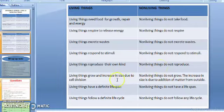Living things grow and increase in size due to cell division but non-living things do not grow. The increase in size is due to the addition of matter from outside that we have seen in the activity which we did last. Living things have a definite life span. Non-living things do not have a definite life span. Living things follow a definite life cycle but non-living things do not follow any life cycle. So we have summarized all the differences between living and non-living things in a tabular form.